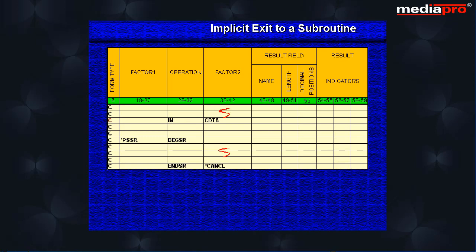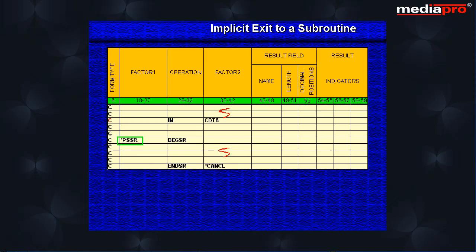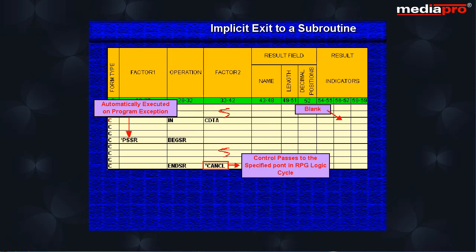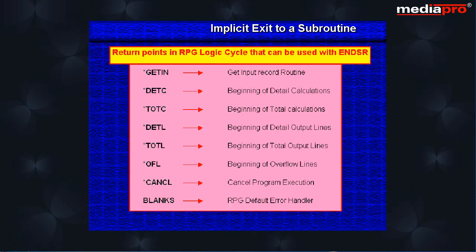Let us see how program exceptions are handled. The subroutine that is to handle program exceptions has to be named *PSSR. When a program exception occurs and no indicators are specified, control will automatically pass to the *PSSR subroutine. As in the case of file exceptions, a return point can be specified in Factor 2 of the ENDSR operation. Here is a list of the values that can be specified in Factor 2 of the ENDSR operation.